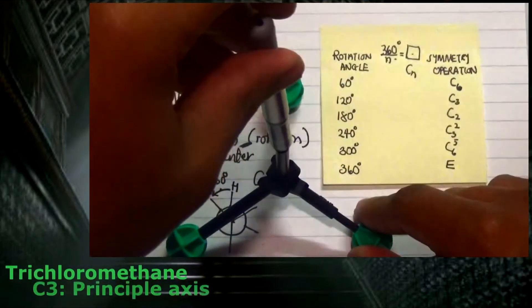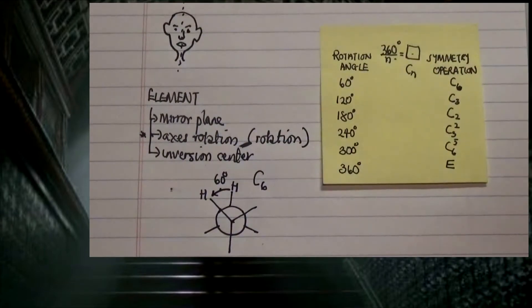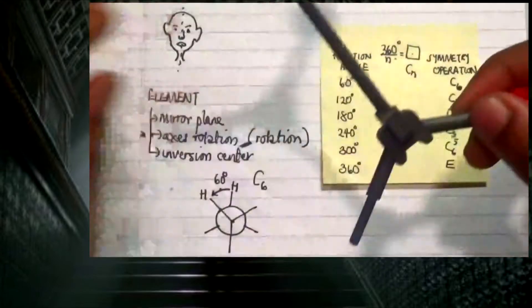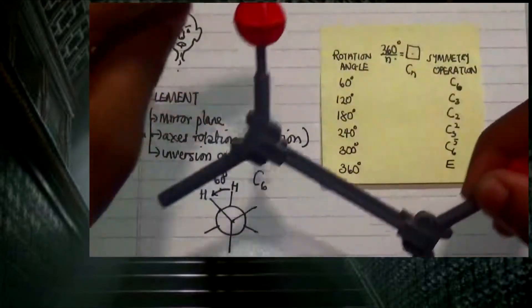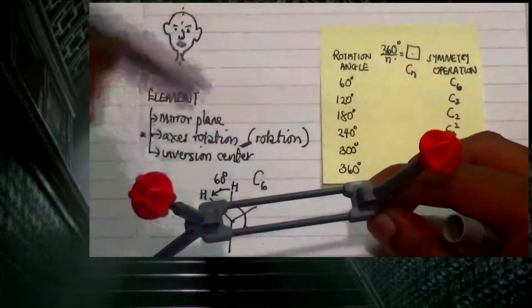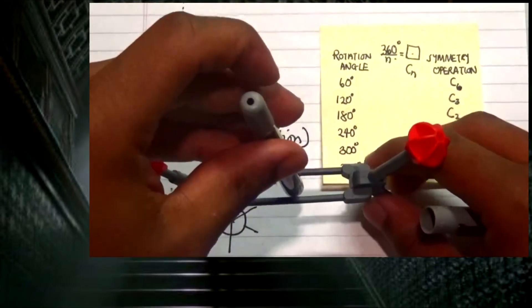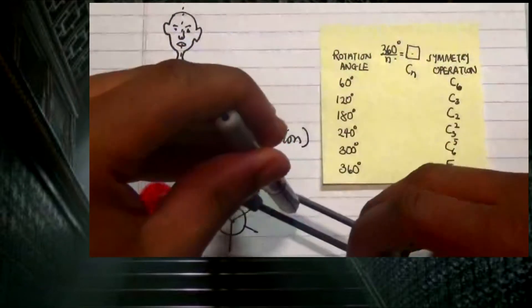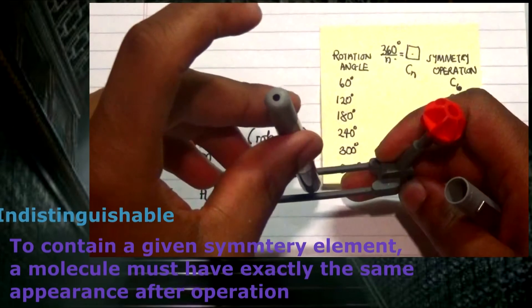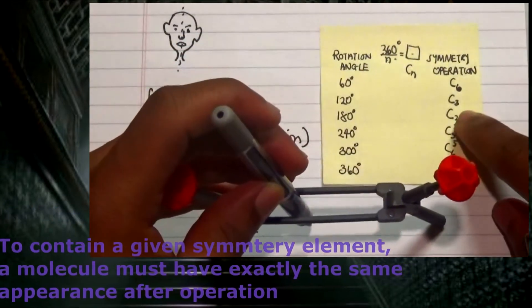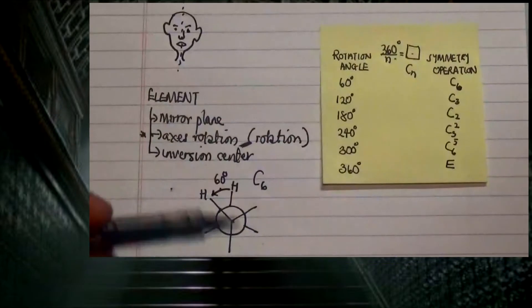Now looking at another compound — let's position the functional groups so that we have two identical groups and two other identical groups arranged around the center. If I apply a C2 rotation and make a 180° turn, I arrive at the same compound, meaning it is indistinguishable. So the symmetry operation here is C2, corresponding to 180°.